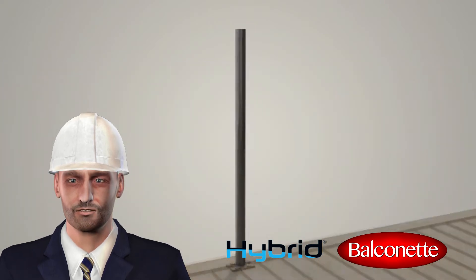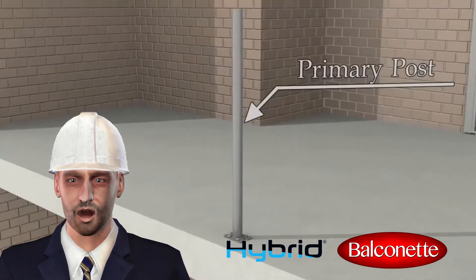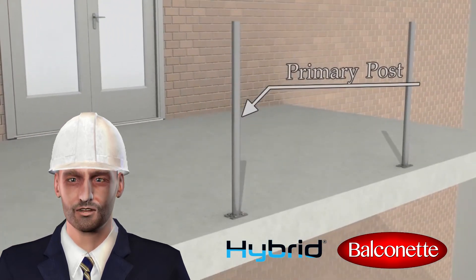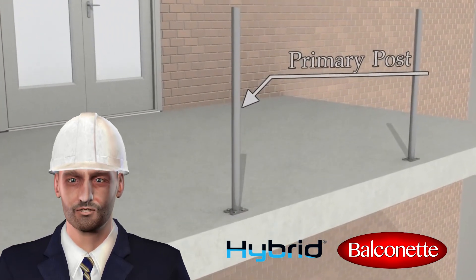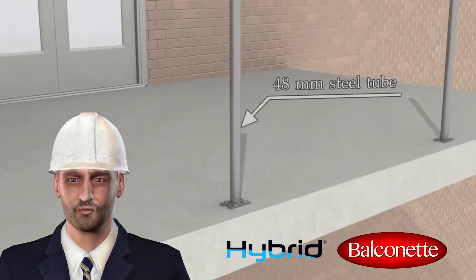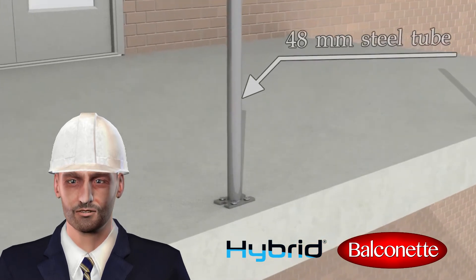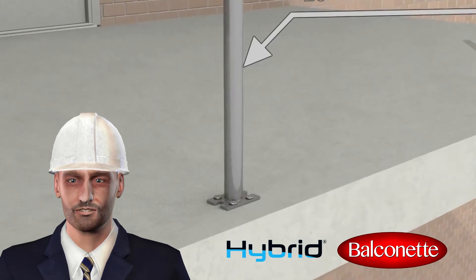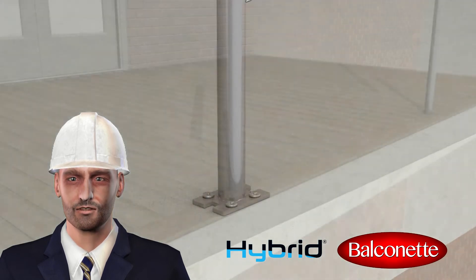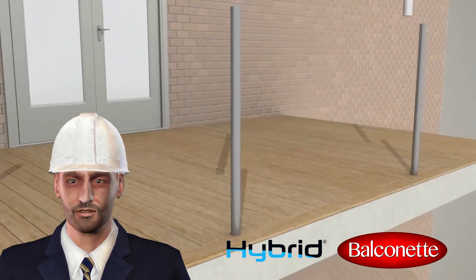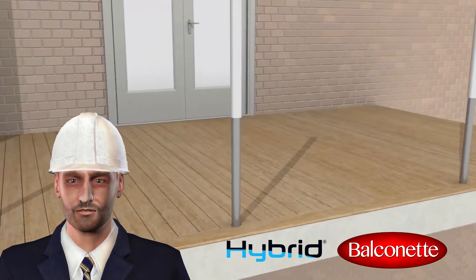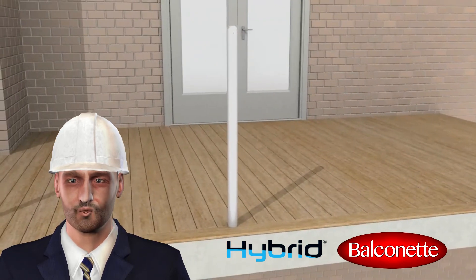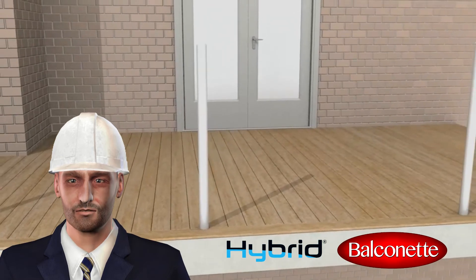The post is made from a two-part system: the primary steel post that has a base plate, and the cover post. On the Orbit system, the primary post is made from a 48mm diameter steel tube with a 15mm thick base plate welded to the bottom. These posts are usually installed beneath the finished floor level, and then on final installation, covered by the system 55mm diameter post.